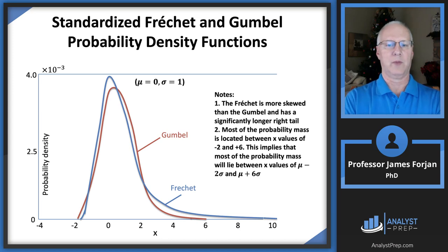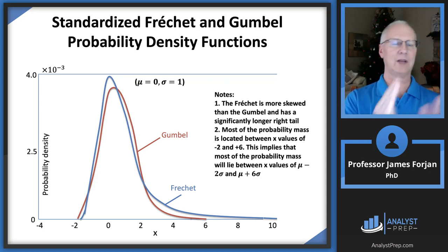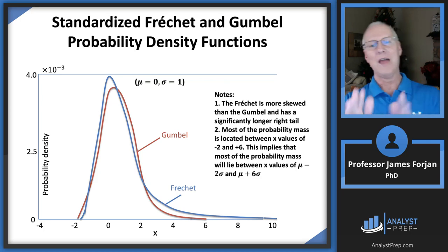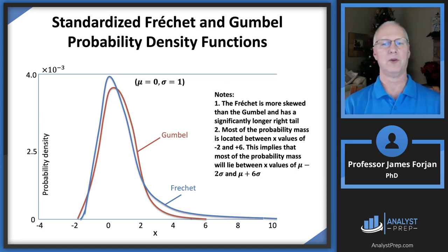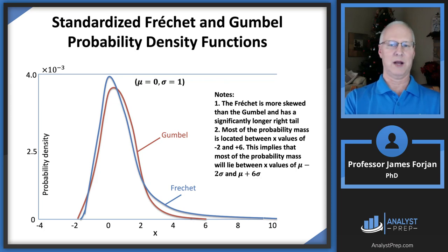Looking at a picture of these two distributions: the Fréchet distribution is tilted more toward the vertical axis and has a heavier tail than the Gumbel. With both, the bulk of the probability mass is located in the middle — maybe between roughly minus two and plus five or six — but we're worried about those tails.